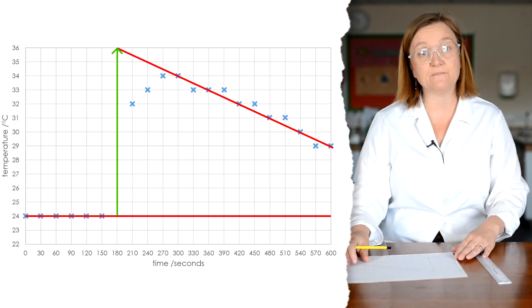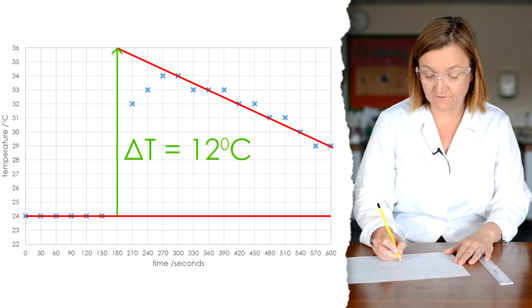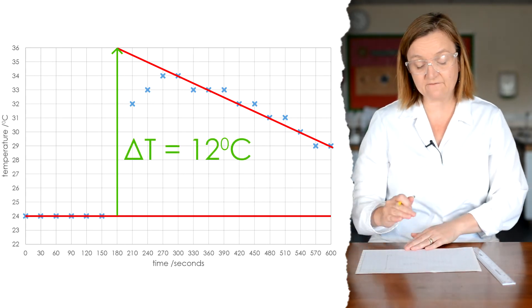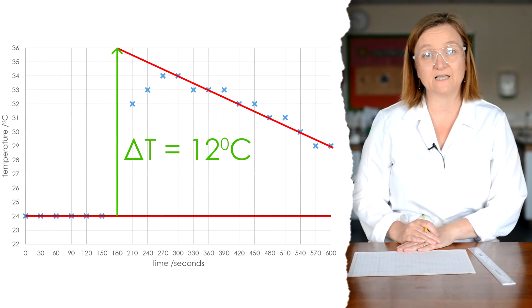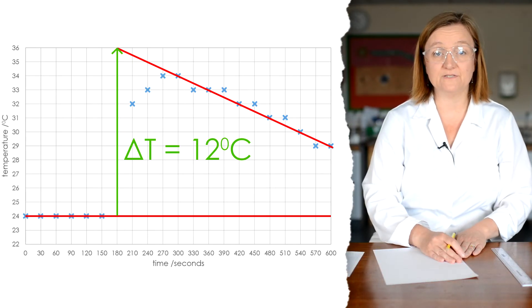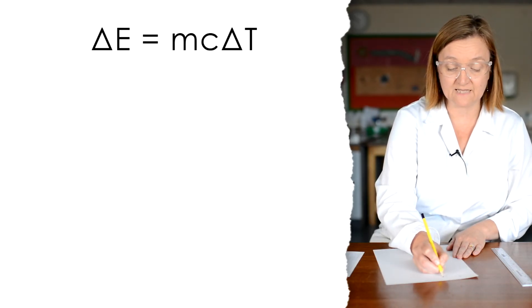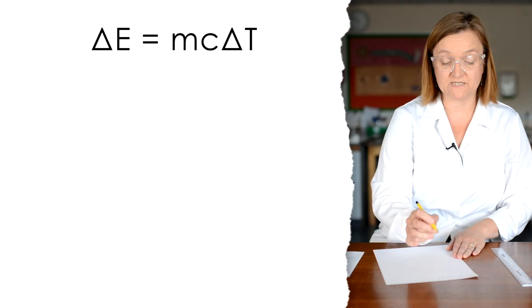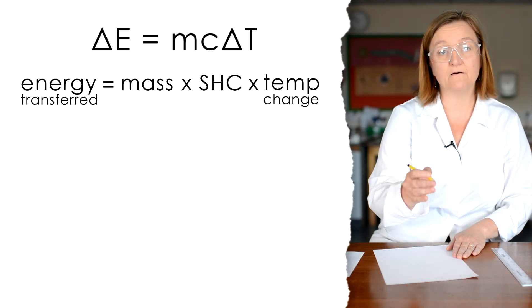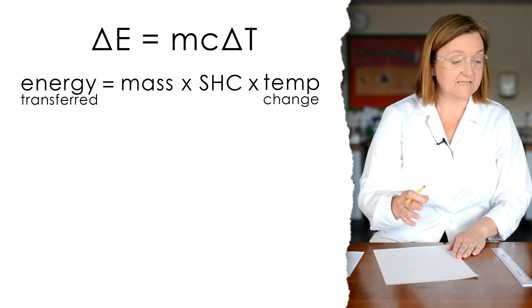And it's going to go from 24 degrees up to 36 degrees. So that would have given me a temperature change, a delta T of 12 degrees. Now, using that figure, I can now work out the enthalpy change of neutralisation. So I'm going to use the equation that energy transferred is mc delta T, which is the mass of the solution multiplied by the specific heat capacity of the solution multiplied by the temperature change.